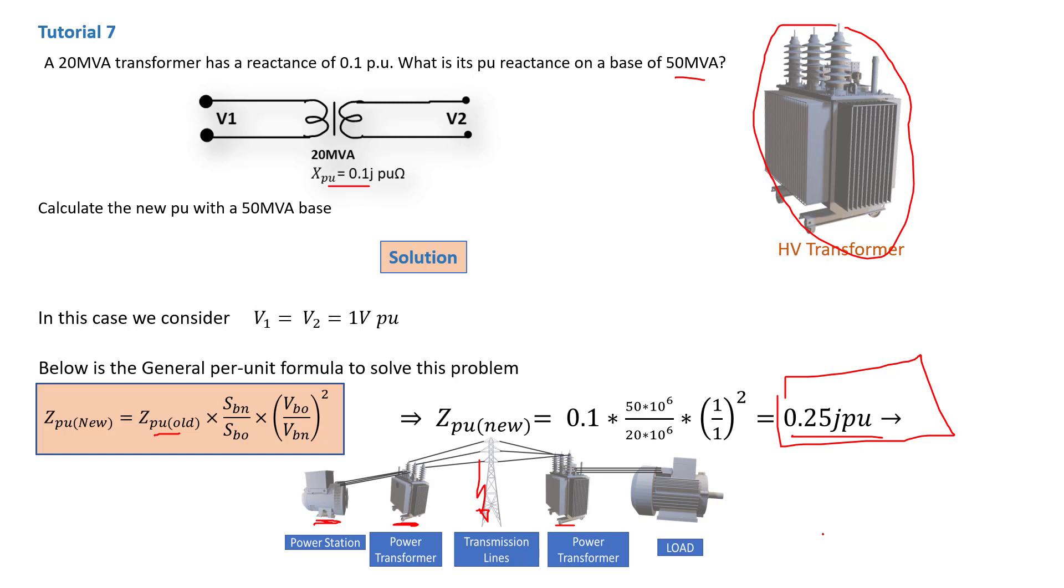So this is why it's very important doing power system analysis, knowing how to do your per unit calculations. Ultimately, that's going to help you if you want to ensure your system is protected. Because based on the magnitude of the fault current, you'll be able to determine what is the protection required, the size of the circuit breaker or any other protection apparatus.